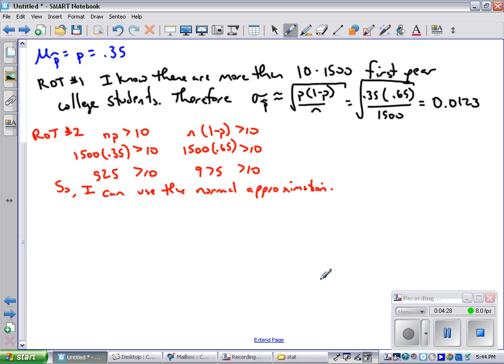So now I can draw my curve. My curve is normal based on rule of thumb number 2. The center of it is 35%. What I'm actually interested in is the area in here because that will tell me the likelihood that I'm within 2 percentage points. And I know this distance is 0.0123.